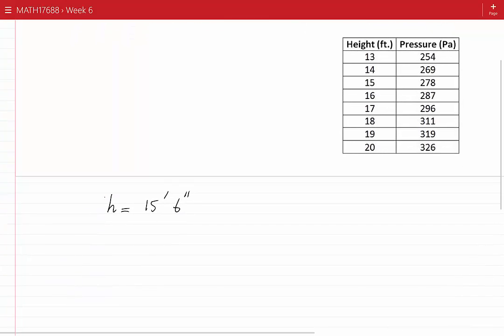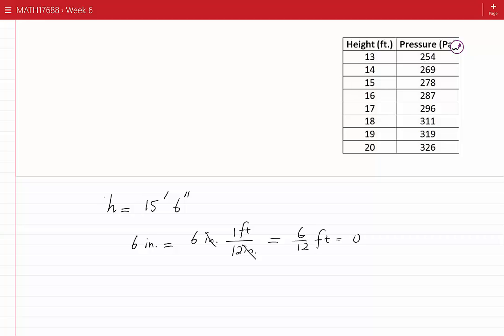We can convert 6 inches into feet. Six inches equals 6 over 12 feet, since one foot is 12 inches. This equals 0.5 feet. Therefore, h is 15.5 feet.